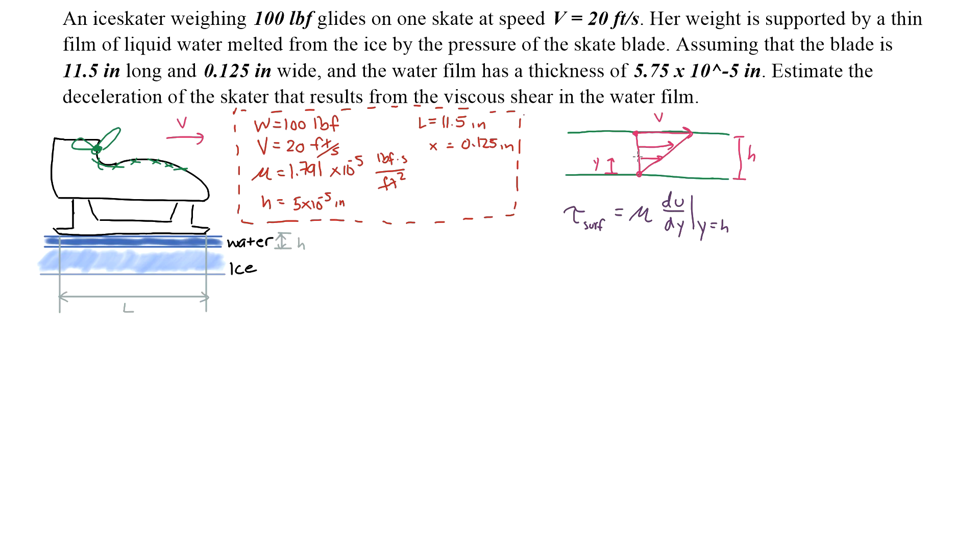So du/dy is simply the slope of this diagram, which is V over Y. We evaluate this at Y equals H, and we get V over H. So the shear stress at the surface of the thin film is simply equal to μ times V over H.